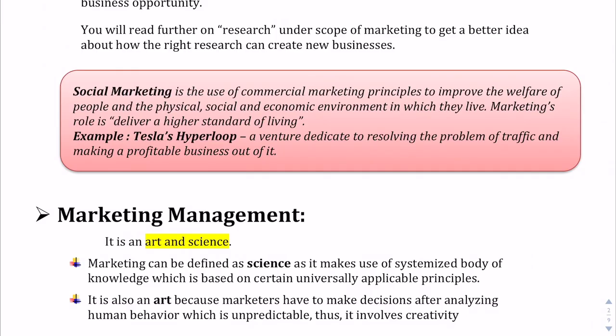Now moving on to social marketing. The name itself tells us it comprises two words: social and marketing. In social marketing, the need belongs to society at large. Social marketing is nothing but using the principles of marketing to improve the living standards of people and the collective welfare of society.